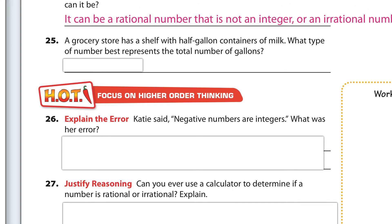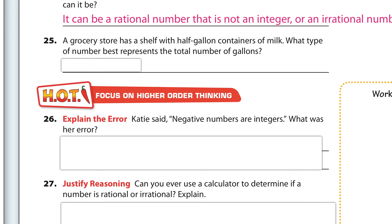A grocery store has a shelf with half-gallon containers of milk. What type of number best represents the total number of gallons? It looks like it'd be rational numbers, because it's not just whole numbers or integers — you can have half, which is 0.5, making it rational.